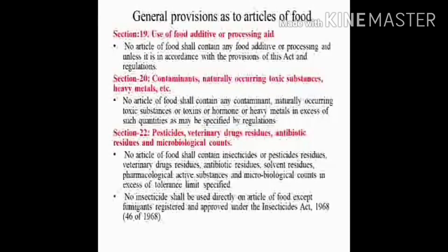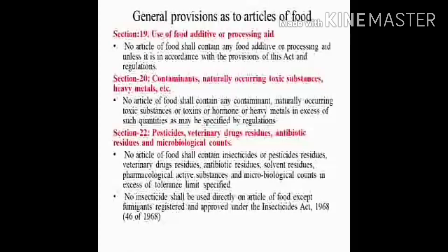The important functions of the Food Safety and Standards Act deal with general provisions as to articles of food. Section 19 explains that the use of food additives or processing aids should be in accordance with the provisions of this act. Section 20 explains that no article of food shall contain any contaminant, naturally occurring toxic substances, or toxic substances, hormones or heavy metals in excess of such quantities as may be specified by the regulation.